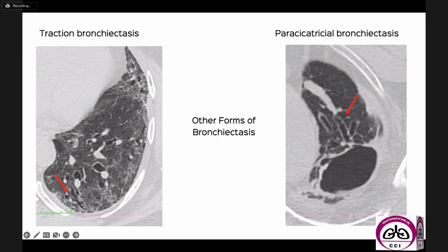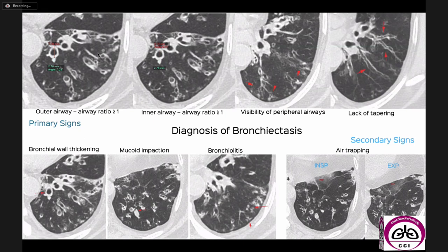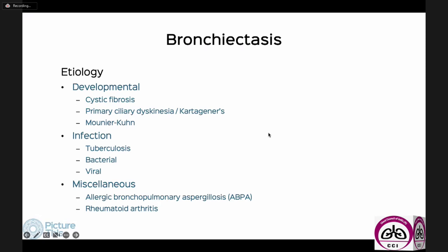Traction bronchiectasis is a term used when, in the presence of interstitial lung disease, we have dilatation of the bronchioles. Paraseptal bronchiectasis occurs following infection such as tuberculosis. I've summarized the primary and secondary signs on a single slide so it's easy to understand how straightforward it is to diagnose bronchiectasis once you know these signs.